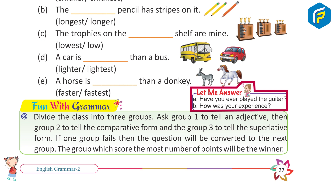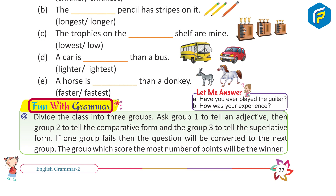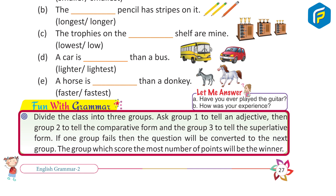Let me answer: A. Have you ever played the guitar? B. How was your experience? Fun with Grammar: Divide the class into three groups. Ask group 1 to tell an adjective, group 2 to tell the comparative form, and group 3 to tell the superlative form. If one group fails, the question will be transferred to the next group. The group which scores the most number of points will be the winner.